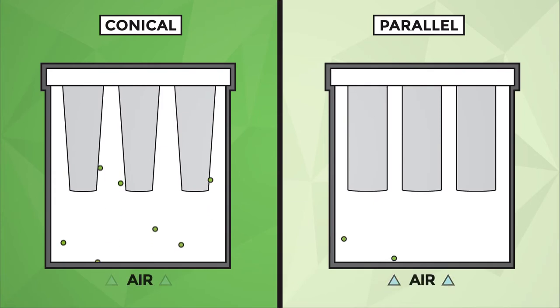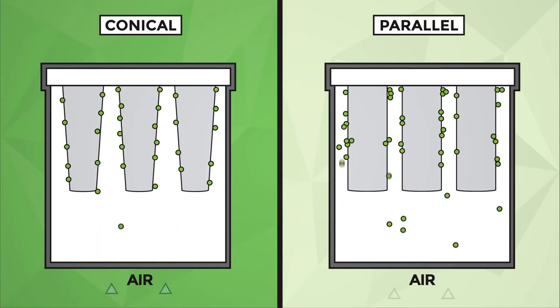The velocity of dust-laden air is lower as it rises between the conical filter elements. This gives lower dust load onto the elements and less dust re-entrainment during cleaning.